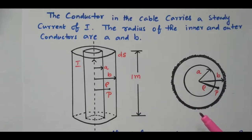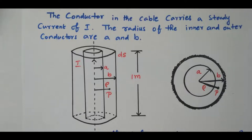The inductance of a cable, coaxial cable, or cable with two conductors all share the same derivation. A separate derivation exists for the inductance of a solid conductor, and another for the inductance of a two-wire overhead transmission line. This derivation refers to the underground cable having two conductors.